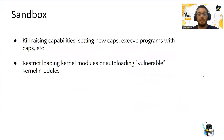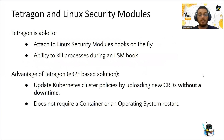Beside the tracing and capability-detection capabilities, Tetragram can also block loading of kernel modules, or auto-loading of vulnerable, old, or unpatched kernel modules. Tetragram can also attach to Linux Security Module hooks on the fly. One of the nice features is that it can update the security policies of your Kubernetes cluster on the fly without downtime, meaning it doesn't require a container or operating system restart.